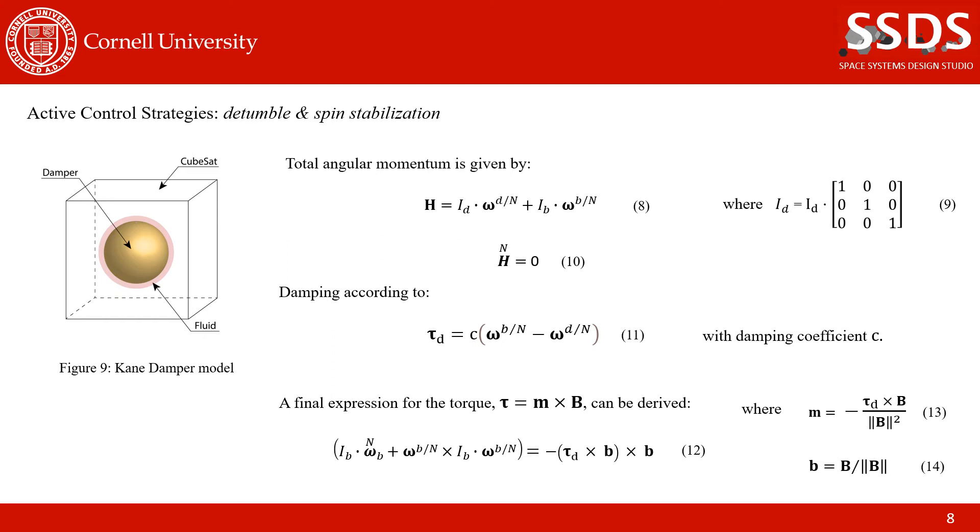We can express the angular momentum of the system as the sum of the damper and the CubeSat body, as shown in the top equation. With no external torques, the derivative of the system sums to 0. And since the damper is a sphere, it has a straightforward inertia matrix. The system dampens according to the difference between the spacecraft angular velocity and that of the damper, with damping coefficient C. Given time constraints, I refer you to the paper for the full derivation. But we can arrive at the final expression for the torque and the associated magnetic dipole moment as shown at the bottom here. What's great about this model is that instead of detumbling the CubeSat and then spinning up about the desired axis, the energy dissipation effects produce a torque that will drive the spacecraft's angular momentum vector to be parallel to the maximum principal axis of inertia.